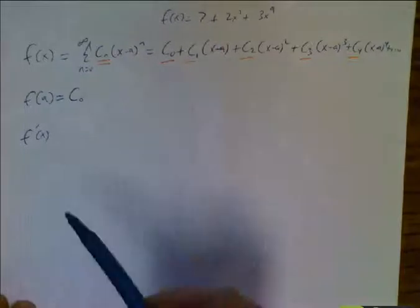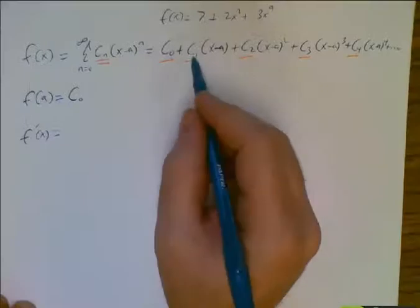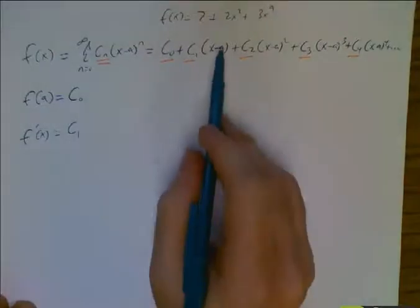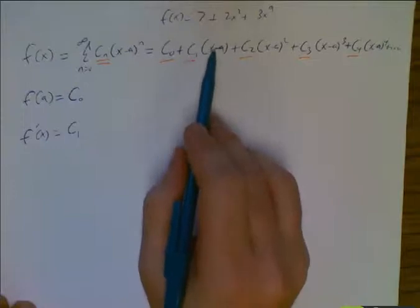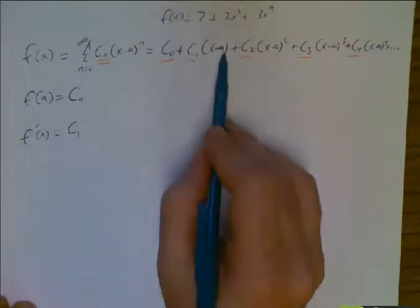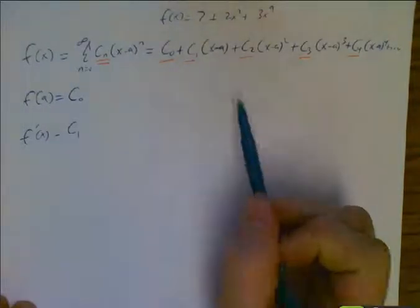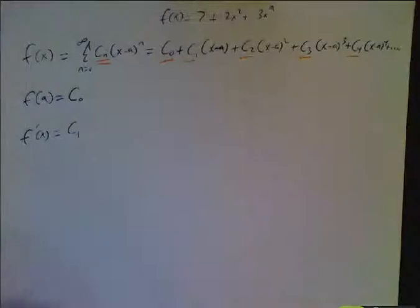The c sub zero, of course, goes to zero. c sub one times x minus a, well, that's just c sub one, right? This is c sub one x. The derivative would be c sub one. a is another constant, so that part goes to zero. c sub one x minus a goes to c sub one.